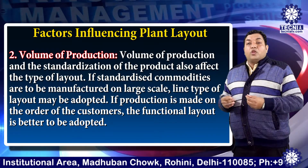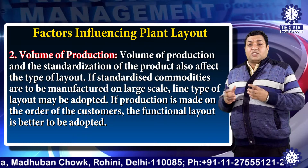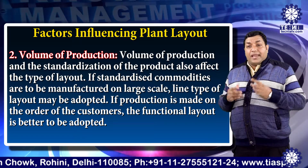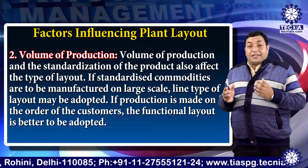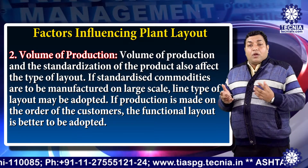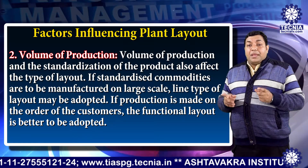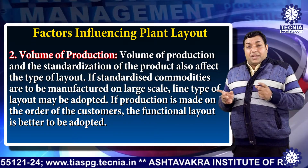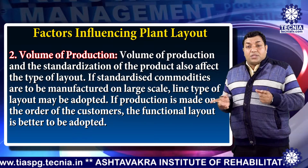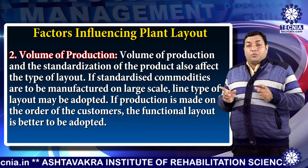The second factor is volume of production. Volume of production and the standardization of the product also affect the type of layout. If standardized commodities are to be manufactured on a large scale, then the line type of layout may be adopted. If production is made on the order of customers, the functional layout is far better to be adopted.